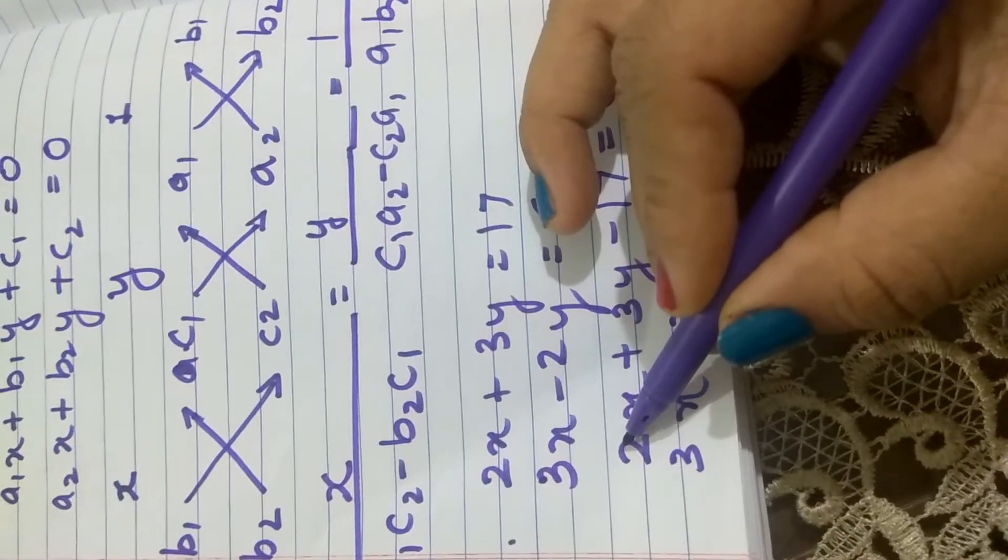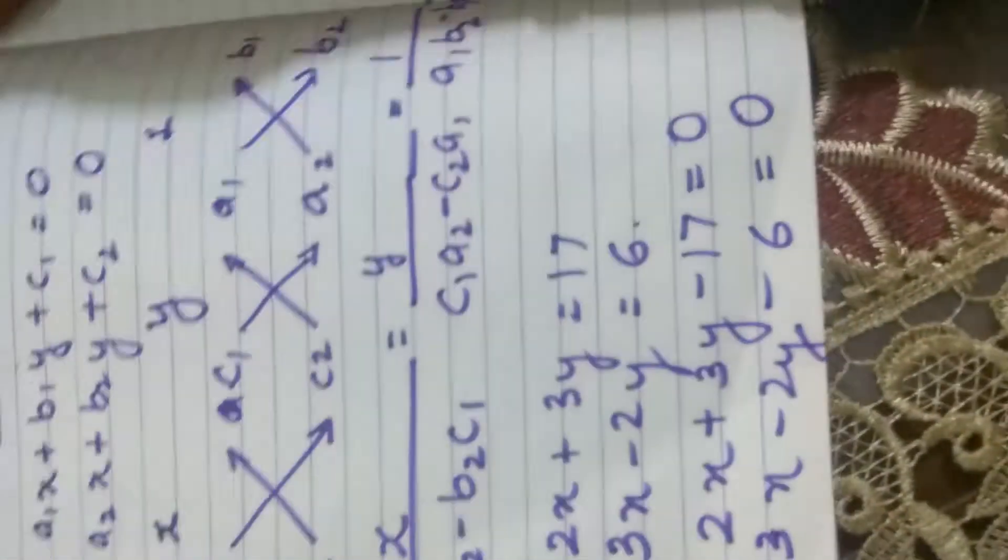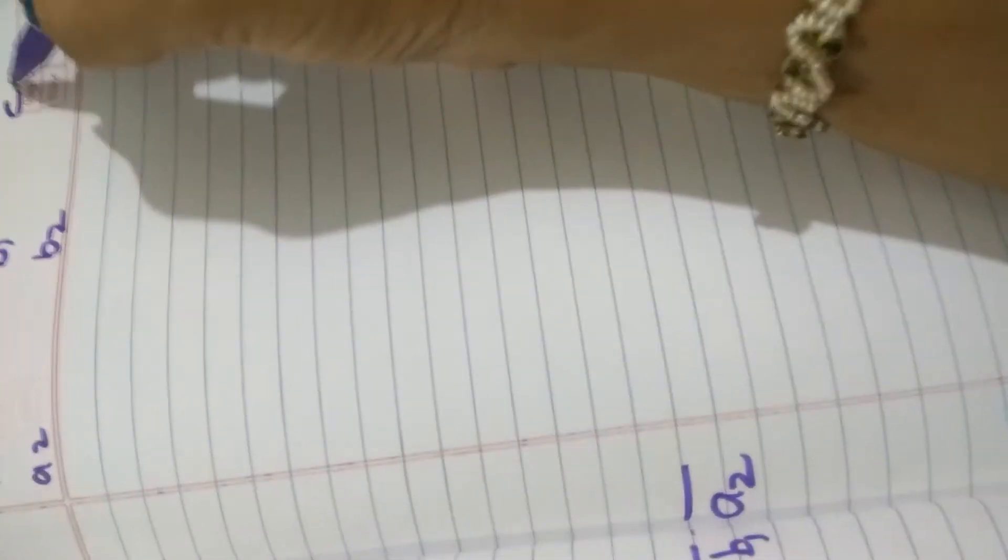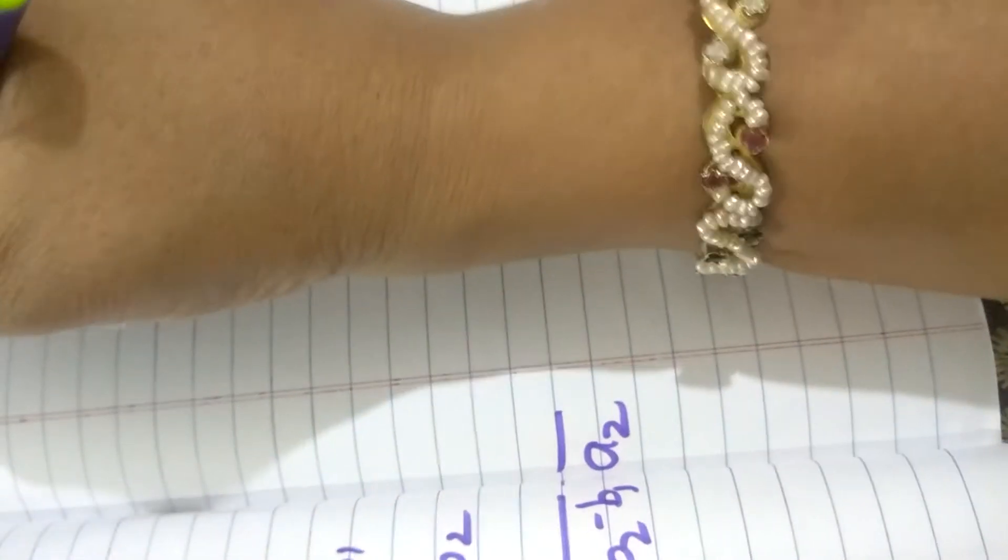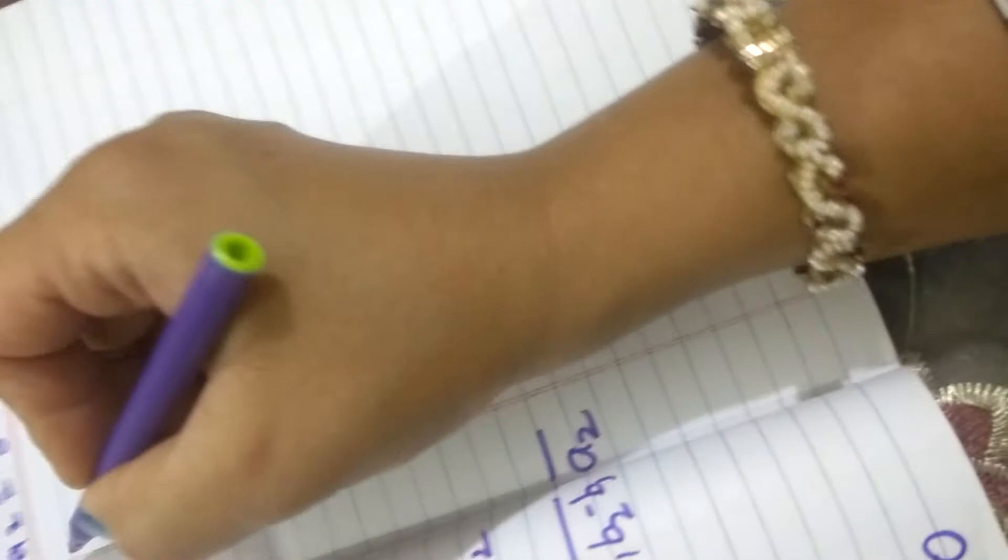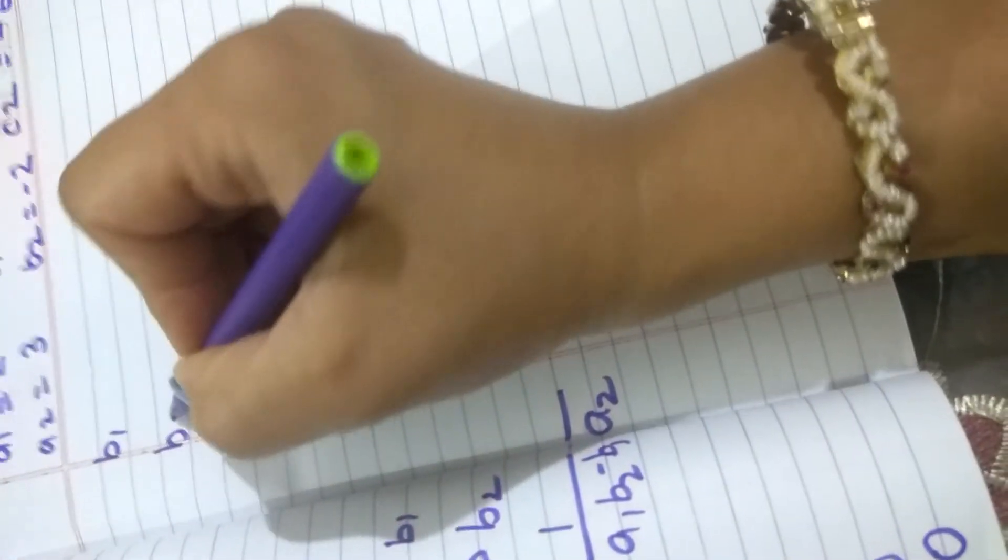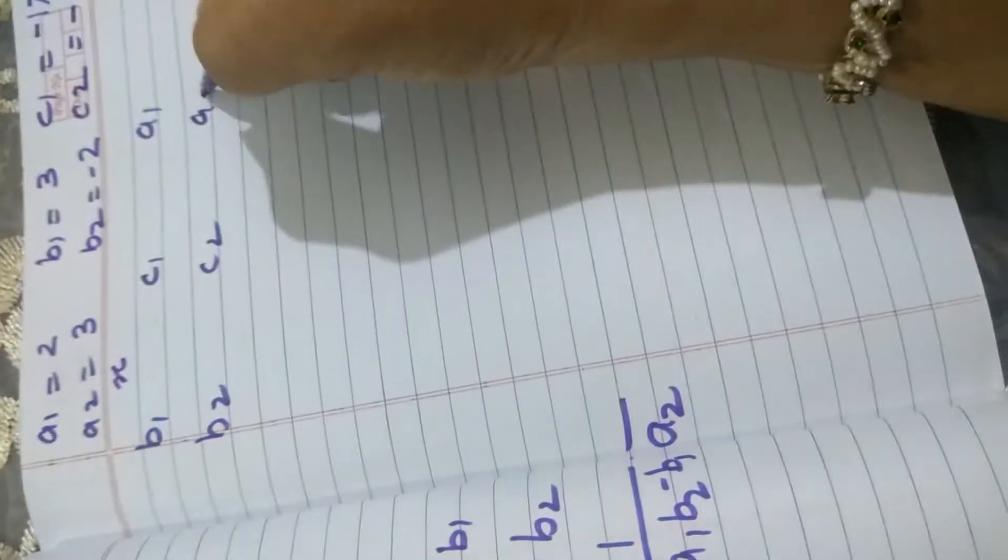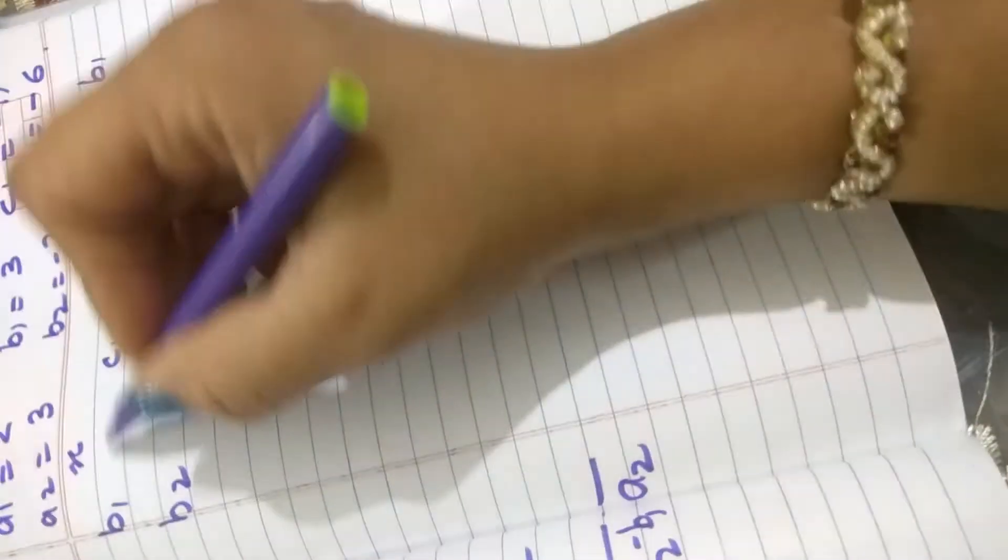That means here the a1 is 2, a2 is 3. We will just write it, the values of a1, a2, b1, b2, and c1, c2. Thus, we have written all the coefficients so that when we form it, it will be easier for us. Now what we had here was b1, b2, x, b1, b2, then c1, c2, then a1, a2, and then again b1, b2 like this.